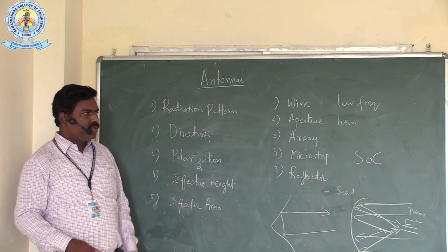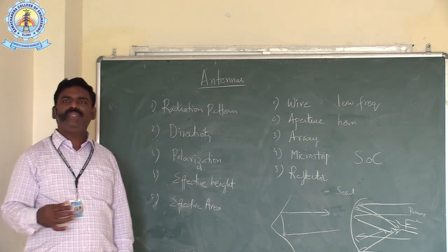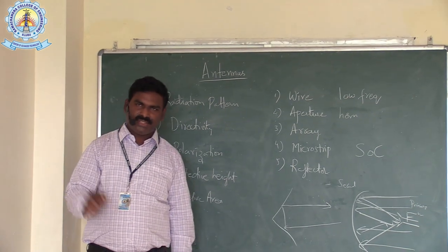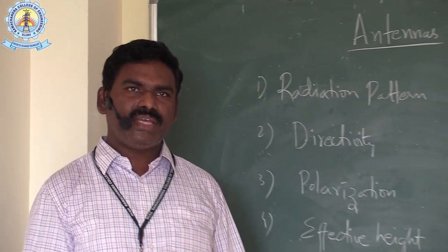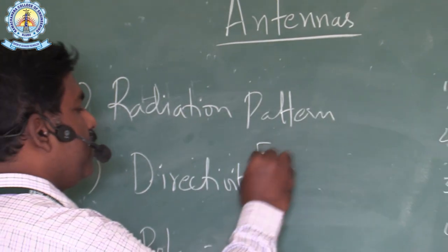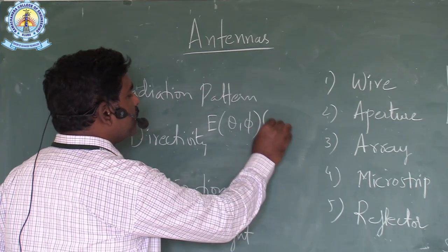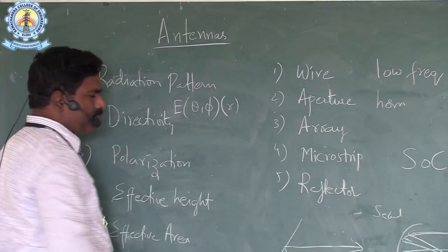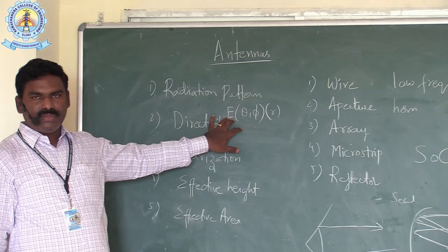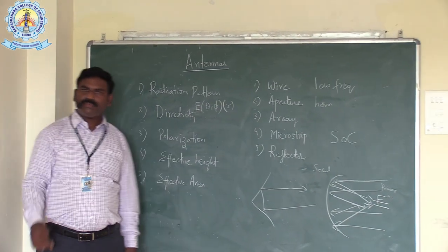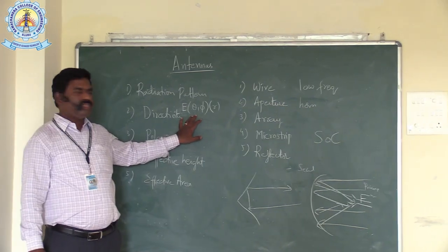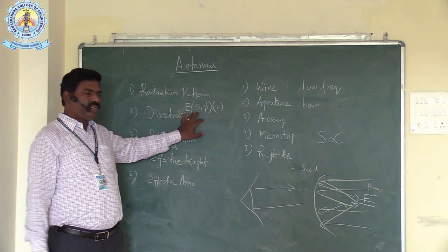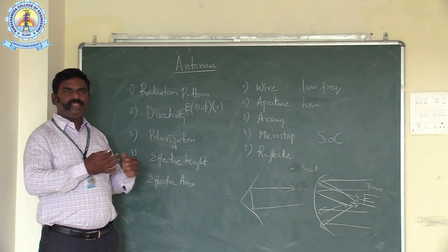The radiation pattern can be directional or omnidirectional. Omnidirectional means radiating in all directions; a directional antenna radiates in one particular direction only. We determine whether it is directional or omnidirectional based on the radiation pattern. The radiation pattern is given by E(θ, φ) — it is a function of theta, phi, and r. Since the antenna is located in free space, the coordinates are r, theta, and phi, where r is the distance from the origin, theta is the elevation angle, and phi is the azimuth angle.